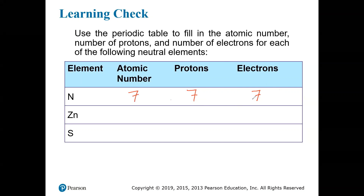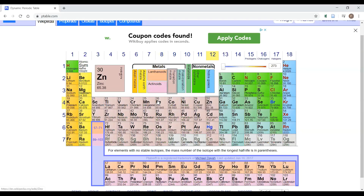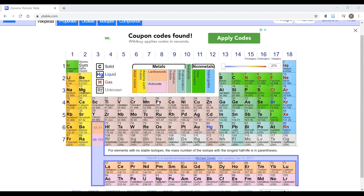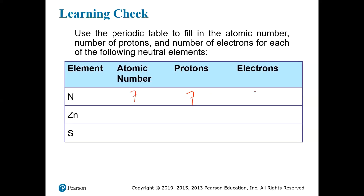This applies to all entries in this table — we're talking about neutral atoms, so atomic number equals protons, and since they're neutral, protons equal electrons. The next two atoms are zinc and sulfur. Looking at the periodic table, zinc is atomic number 30 and sulfur is atomic number 16. So zinc has 30 protons and 30 electrons in the neutral atom, and sulfur has 16 protons and 16 electrons.